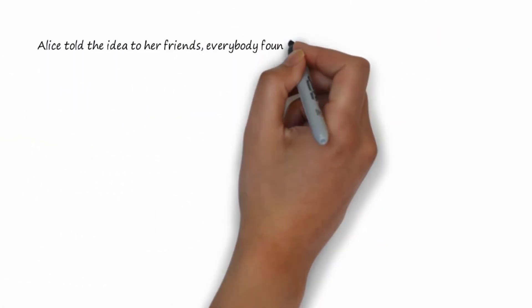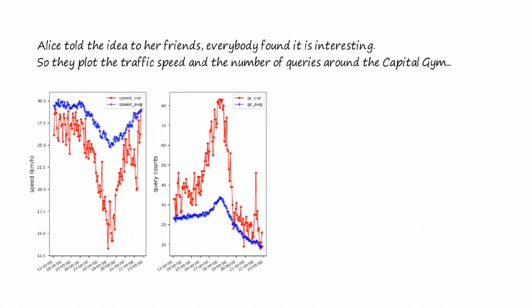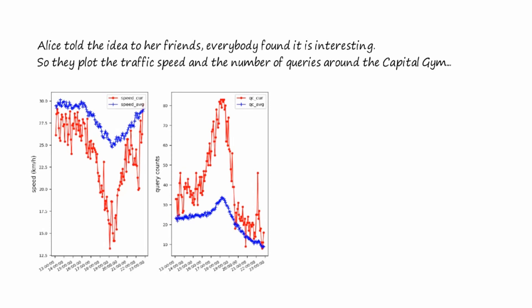Then Alice told the idea to her friends, everybody found it is interesting. So they plot the traffic speed and the number of queries around the Capitol Gym. The traffic speed and online query counts around the Beijing Capitol Gym on April 8, 2017. The red line denotes the unusual traffic speed, while the blue line indicates the usual traffic speed.